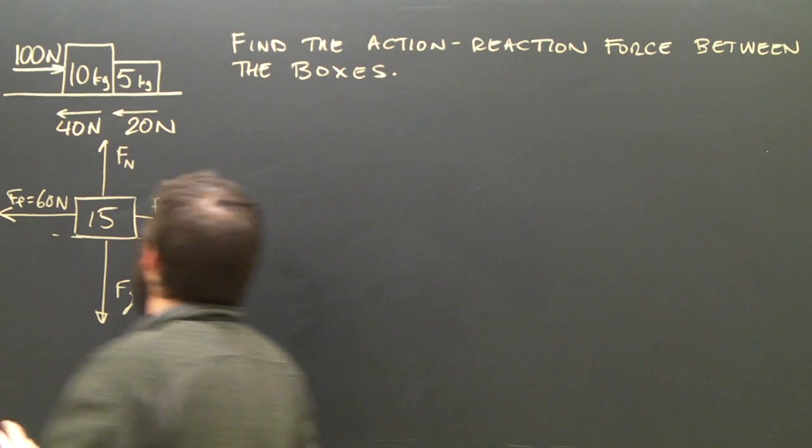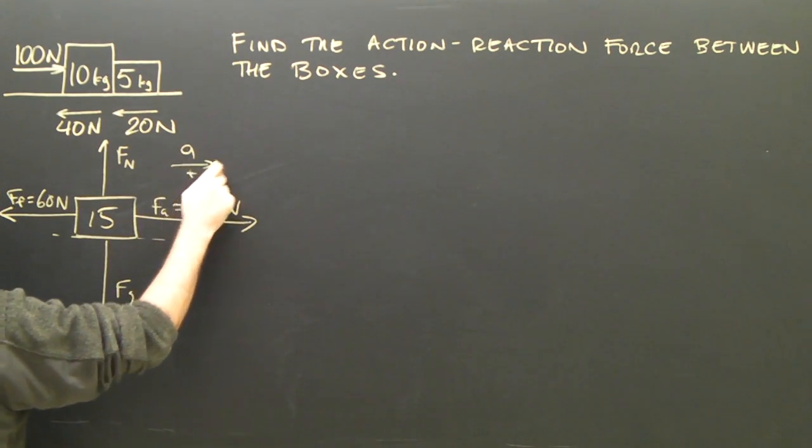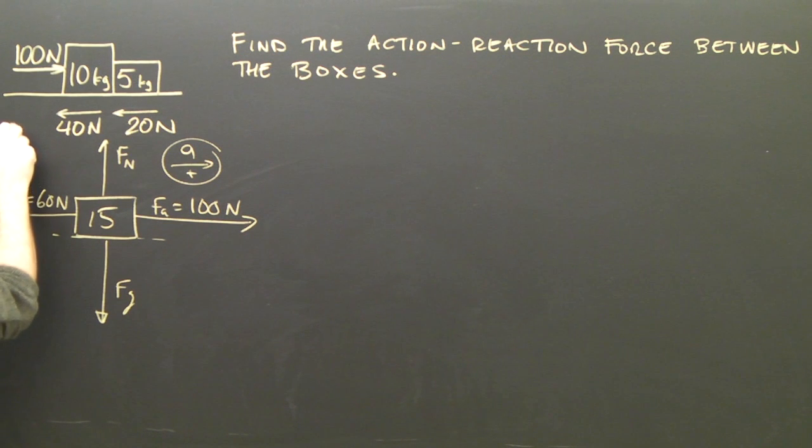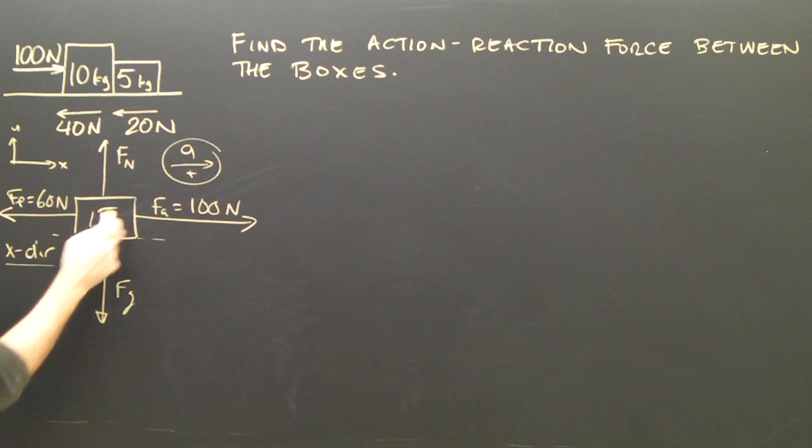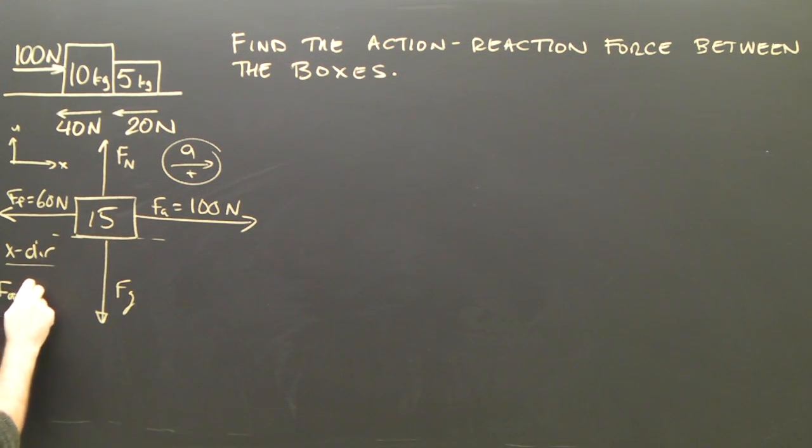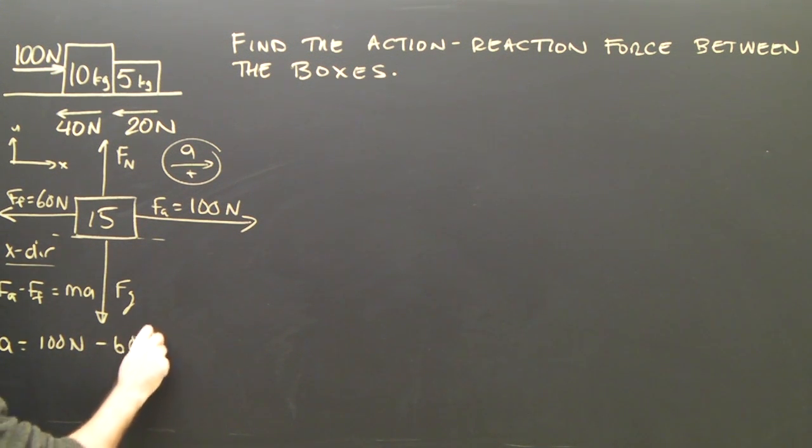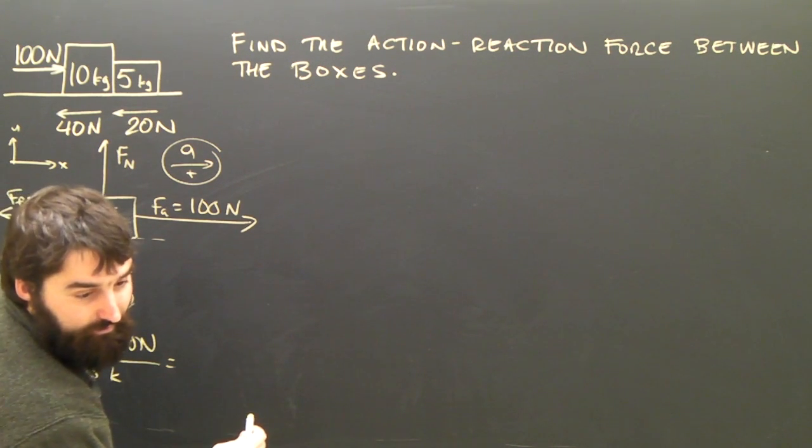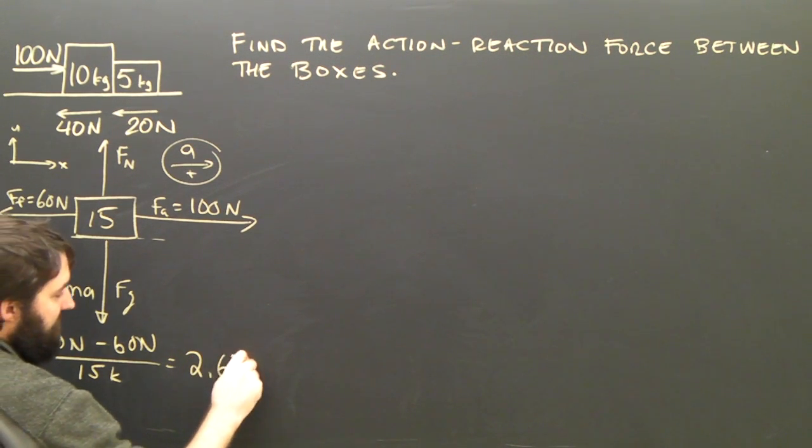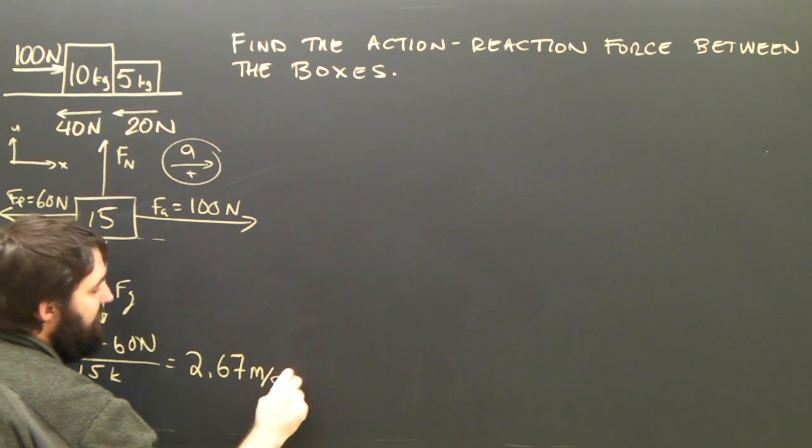So this is a pretty straightforward question. The box is obviously accelerating to the right. I will call up Y, to the right X. In the X direction, we get Fa minus Ff equals Ma, which means that the acceleration equals 100 Newtons minus 60 Newtons divided by 15 kilograms, which equals 2 and 2 thirds, 2.67 meters per second squared.